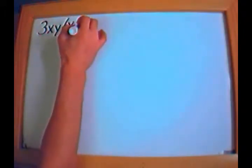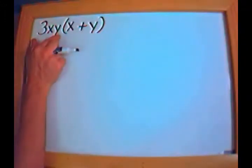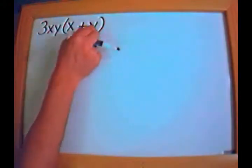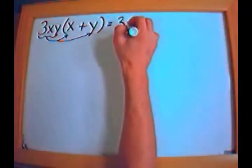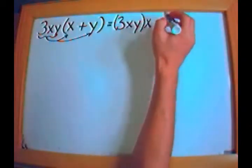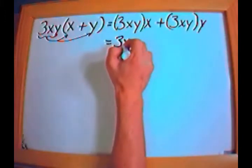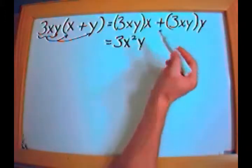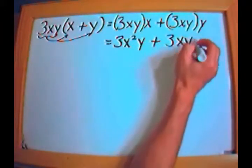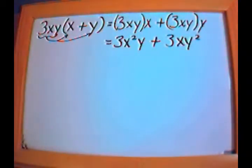Let's do another example. What if I have 3xy times the quantity x plus y? Same story, different verse. I distribute 3xy into each term: 3xy times x plus 3xy times y. Simplifying, x times x is x squared so the first term is 3x squared y, and y times y is y squared so the second term is 3xy squared.